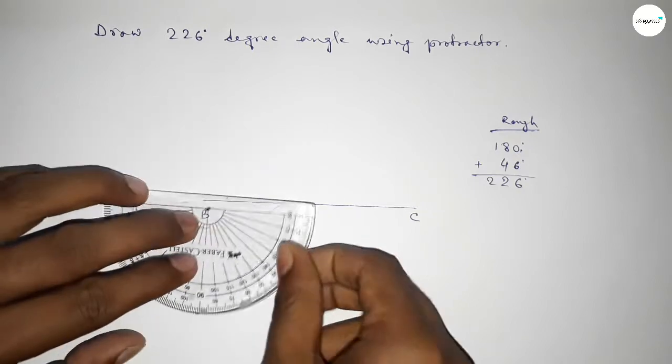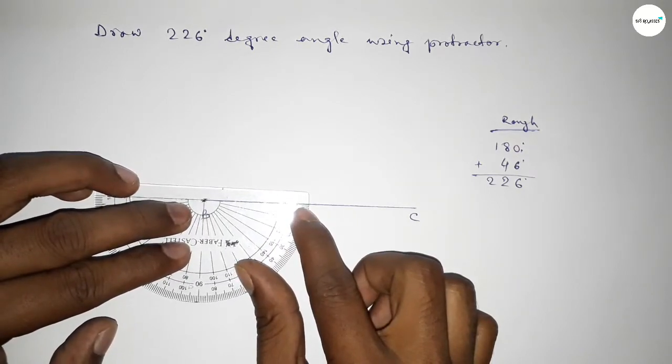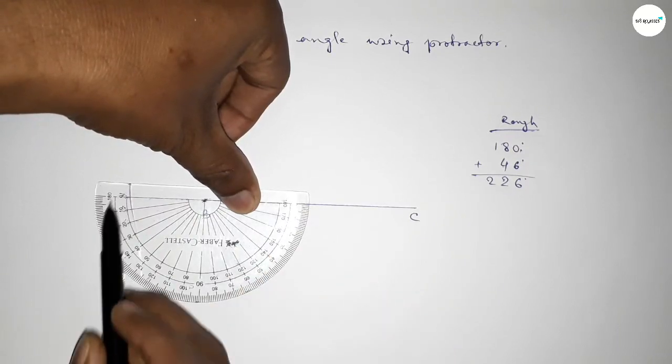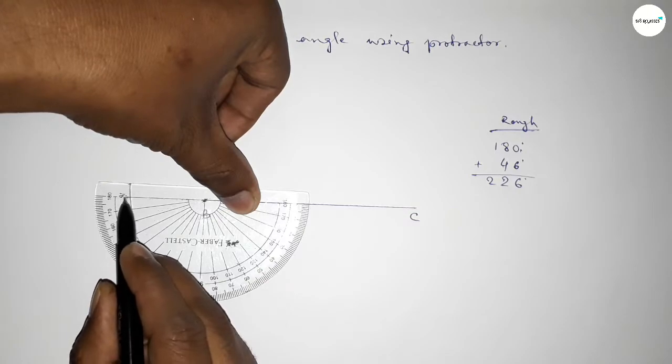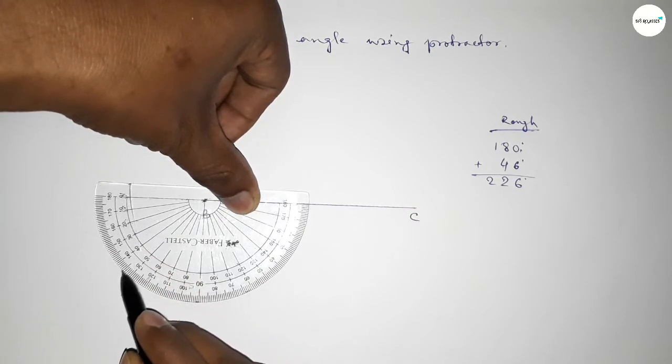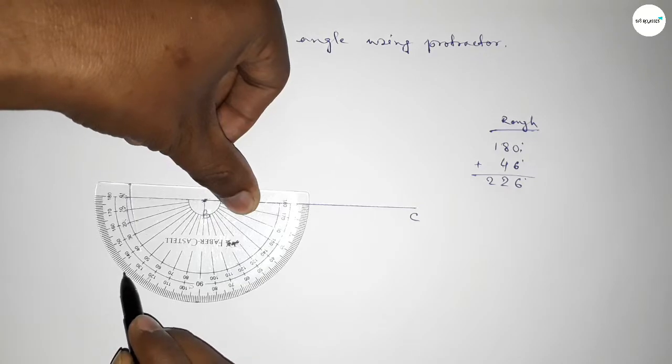Plus putting the protractor on point B and counting 46 degree angle. So this is 180 degree and this is also the starting angle: 0, 10, 20, 30, 40, 45, 46. So this is 46 degree.